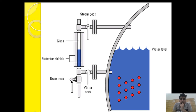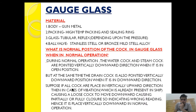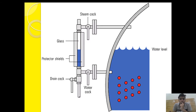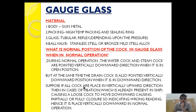The drain cock in the vertical downward position is in closed condition. So remember: the steam cock and water cock pointing vertically downward are open, but the drain cock pointing vertically downward is closed. During normal operation, the water cock and steam cock are pointed vertically downward when in the normal open position, while the drain cock is also pointed vertically downward when in the closed position.